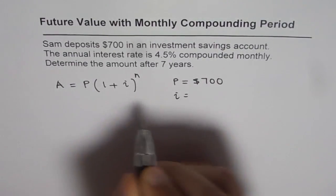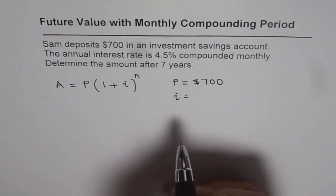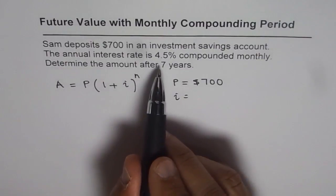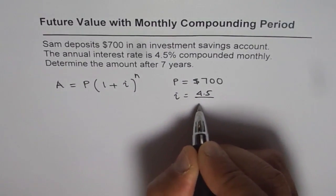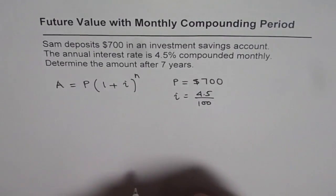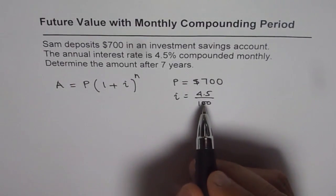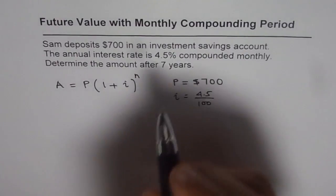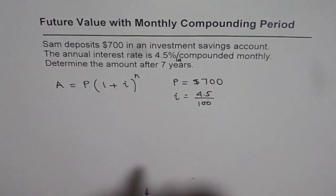Now I is decimal value of rate of interest during the compounding period. In this case the rate of interest is 4.5%, that means 4.5 divided by 100. Now compounded period is monthly. This is per annum. So it is 4.5% per annum compounded monthly.